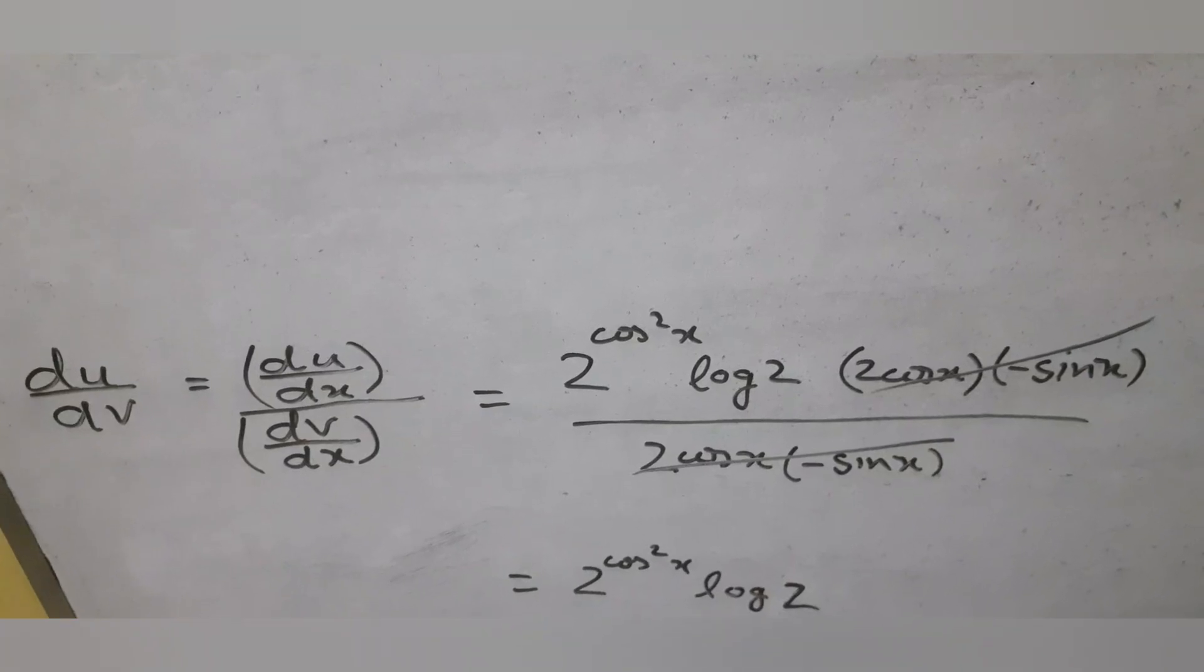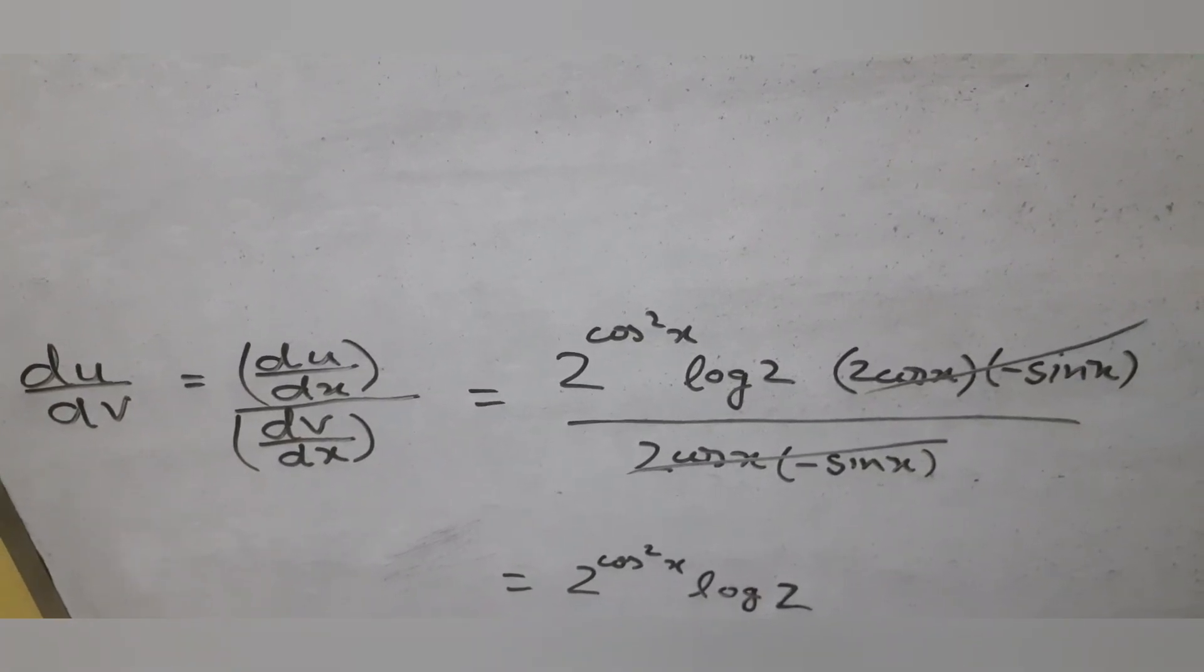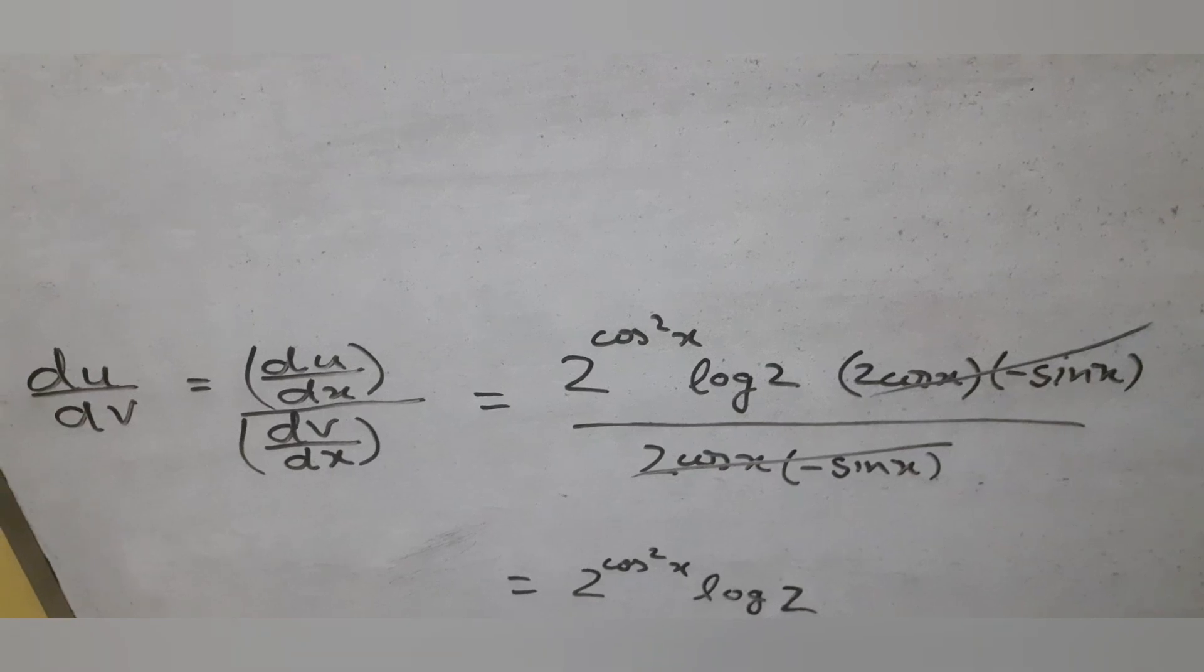Since the base of the logarithm is e, we can also express the derivative as 2 power cos square x into ln 2.